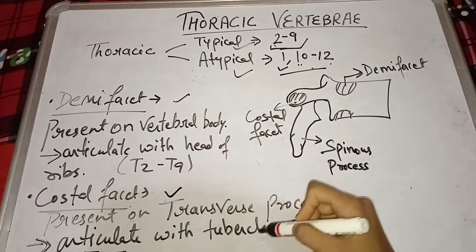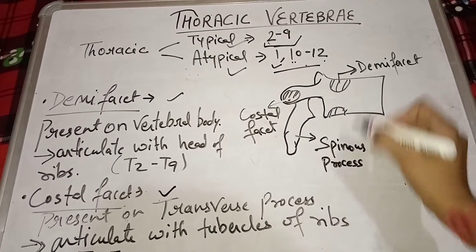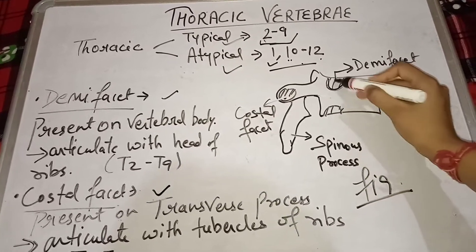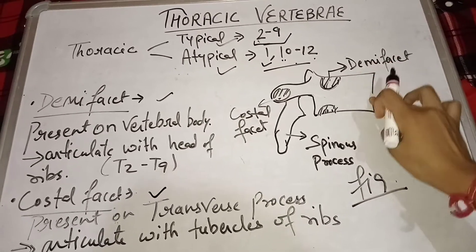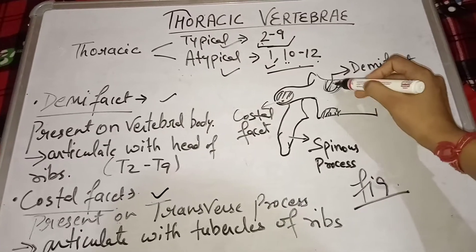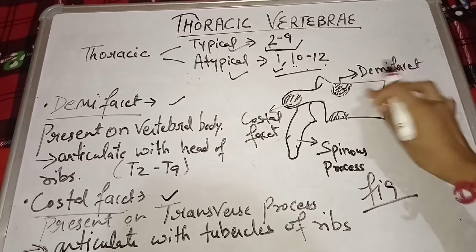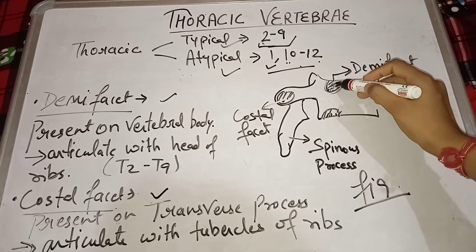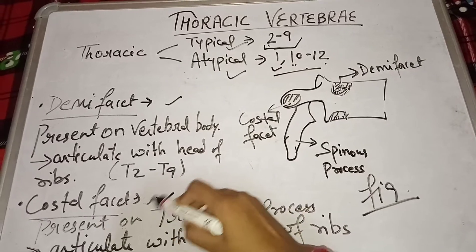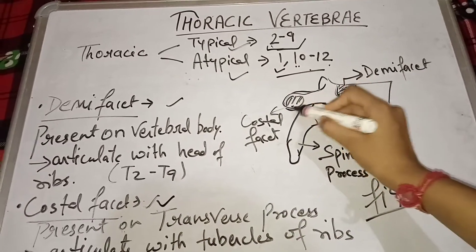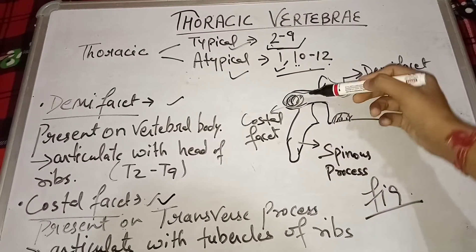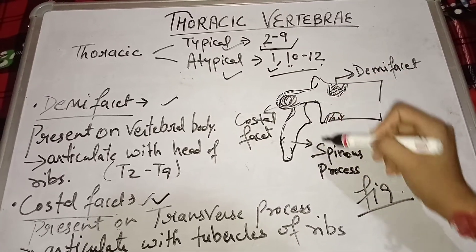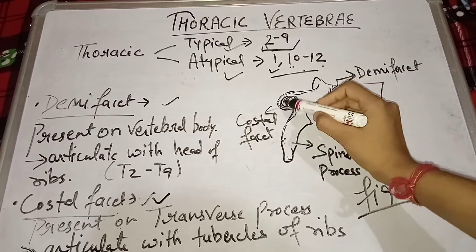Let's talk about demi facet and costal facet. In this diagram of thoracic vertebra, you can see that the demi facet is present on the body of the thoracic vertebra. This is the demi facet which is present on the vertebral body, and it articulates with the head of the ribs. The costal facet is present on the transverse process.